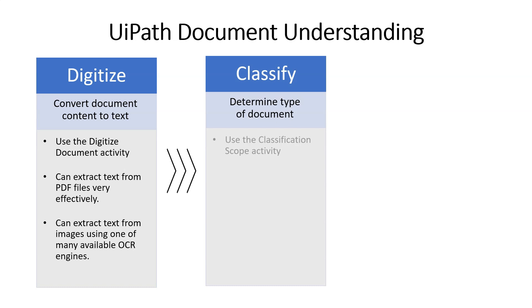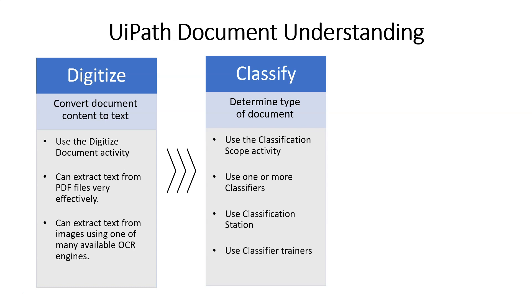You classify the document in UiPath Studio by using the Classification Scope activity. Inside the Classification Scope, you can actually add more than one classifier. We'll have a look at those in one of the following videos. But if one of the classifiers isn't able to confidently classify the document, what we can do is use a helper application called the Classification Station. That's an application that will display the document to a user, and the user can then validate or override the classification that the automation came up with. That information — the validation or the overriding — can then be fed back into a machine learning loop so that the classifier becomes smarter and smarter over time.